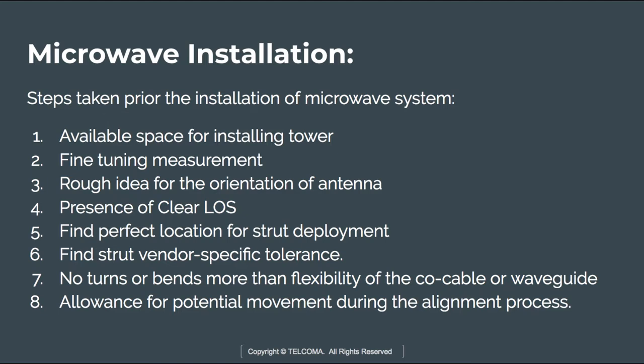There must be a clear line of sight between the transmitter and receiver antenna. We also need to find the perfect location for strut deployment — to tie the strut with the antenna — and note the strut vendor-specific tolerance values. Exceeding the tolerance may cause the strut to break under higher antenna load. No turns or bends must be present in the coaxial cable or waveguide, to allow flexibility and accommodate potential movement during the alignment process.